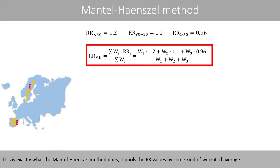This is exactly what the Mantel-Haenszel method does — it pools the relative risk values by a kind of weighted average.